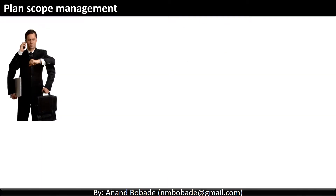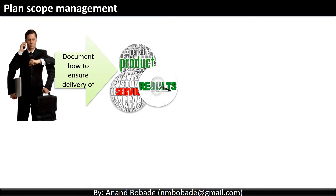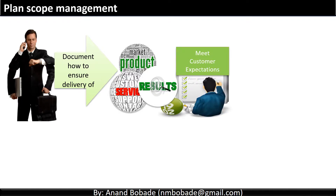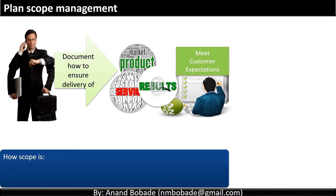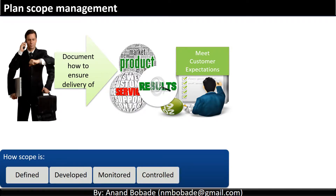As part of planning, a project manager will document details on how to ensure delivery of a product, service, or result, and how to meet customer expectations. Details will include how scope will be defined, developed, monitored, controlled and verified. If you are working on a small project, this may seem unnecessary, as you precisely know the stakeholders and their expectations, and can easily document requirements and finalize the scope.